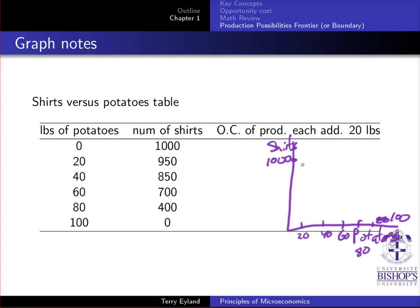So with 20 pounds of potatoes, I will get 950 shirts. For 40, I'm going to have a bigger drop, 850 shirts. Let's say 850. With 60, 700 shirts. And with 80, I'm going to have 400 shirts. And then it drops down to 0. So I'm going to have something that looks a little bit bowed towards the outside. So a little bit kind of this shape that goes like this.